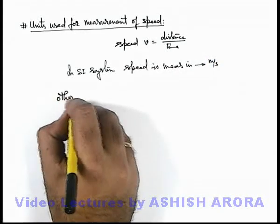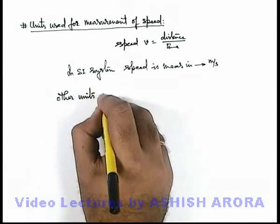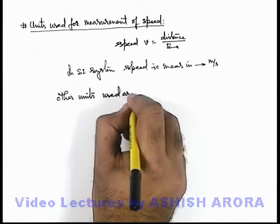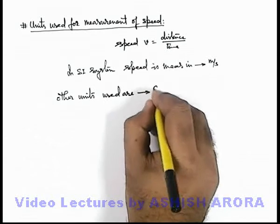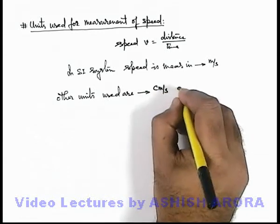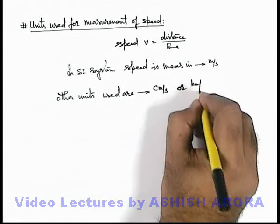Other units used are, we can change the system of measurement, so here it can be centimeter per second or it can be kilometers per hour.